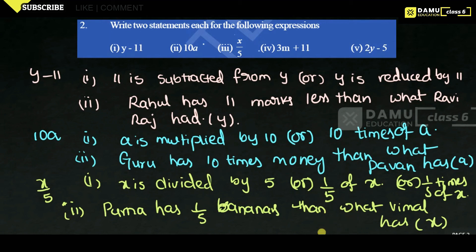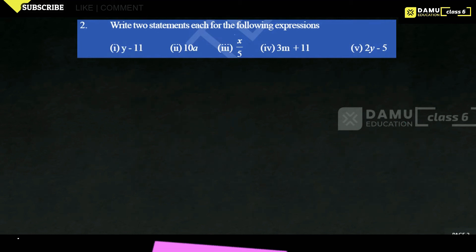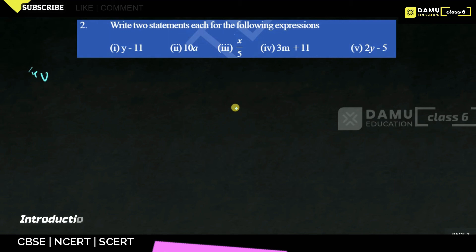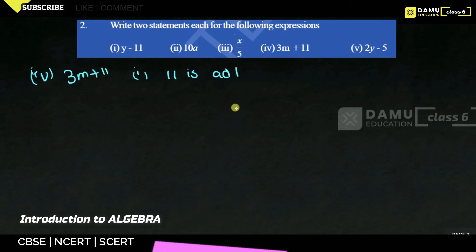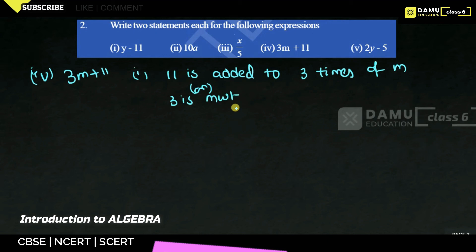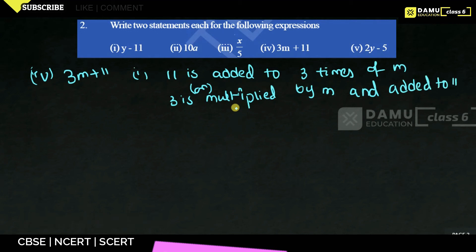The fourth expression is 3m plus 11. First statement: '11 is added to 3 times of m.' Or: '3 is multiplied by m and then added to 11.' Both describe 3m plus 11.